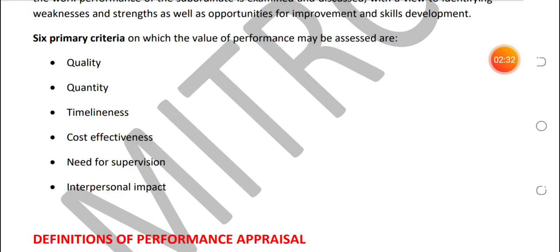Quantity — for example, ek sales person ko per month 25 sales target mila tha, so if the target is achieved, performance is good. Production department employees ko per month 300 units production target mila tha, so if the target is achieved, performance is good. If 300 pieces are produced but defective, then quantity is good but quality is not good.